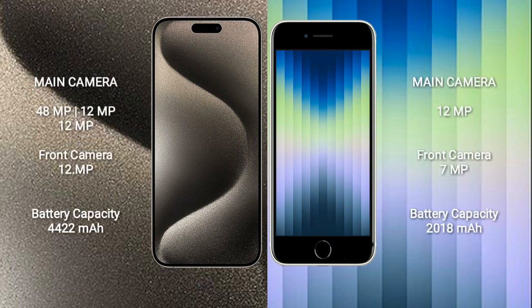iPhone 15 Pro Max features a triple rear camera setup: 48MP, 12MP, and 12MP, with a 12MP front camera. iPhone AC features a single rear camera setup: 12MP, with a 7MP front camera.